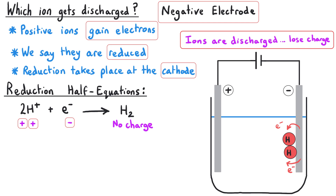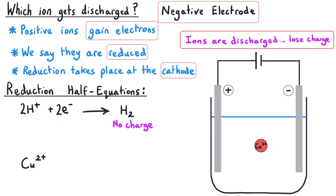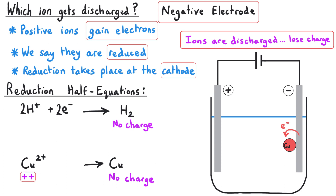Since electrons have a negative charge, adding them to the left-hand side brings that positive charge down. Adding a 2 in front of the electrons gives two negative and two positive charges that cancel out, leaving no overall charge on either side. The balanced half equation is: 2H⁺ + 2e⁻ → H₂. If the ion is copper in the form of Cu²⁺, it gains electrons to become copper metal. The ion has a 2+ charge, so we add electrons to the left-hand side — two electrons — to balance the 2+ charge, giving: Cu²⁺ + 2e⁻ → Cu.